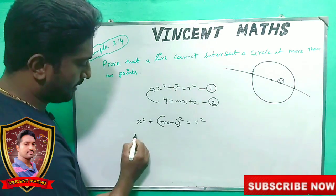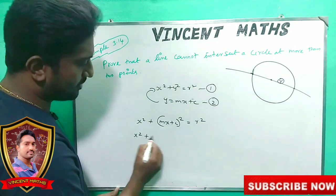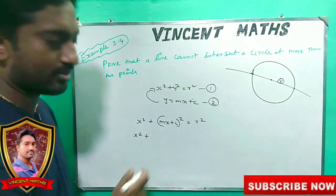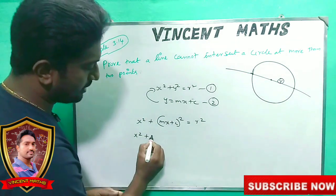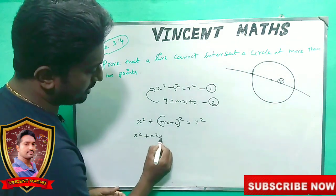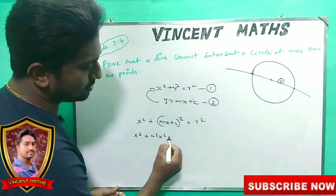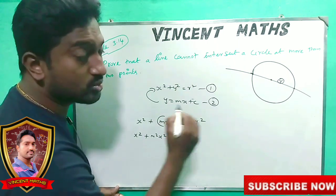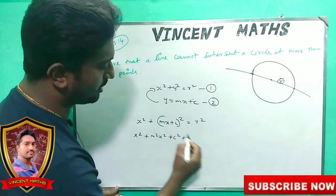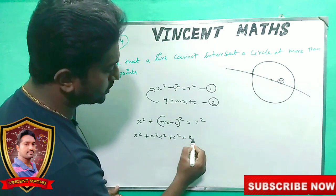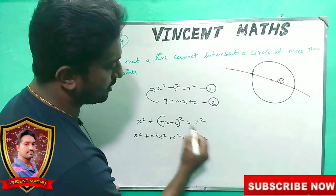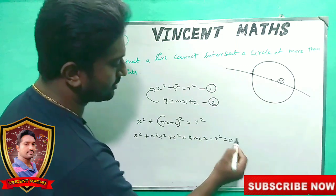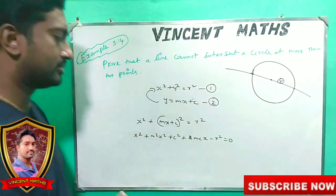x squared plus (a plus b) whole squared expands to a squared plus b squared plus 2ab. So we get m squared x squared plus 2mc x. Now what do we do with this equation?